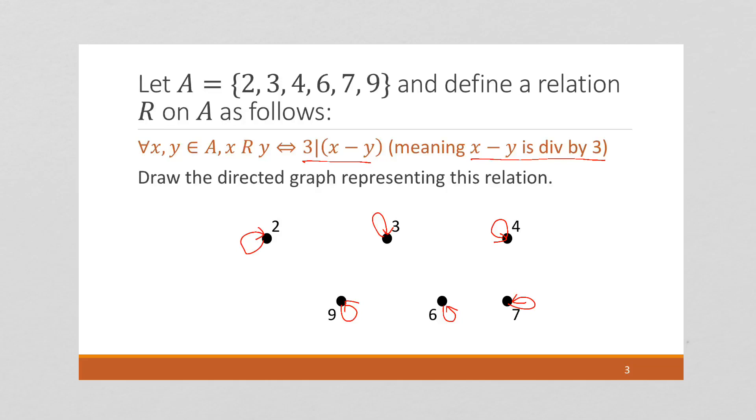Three minus nine gives negative six, which is divisible by three. And similarly, nine minus three gives positive six, which is divisible by three.